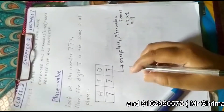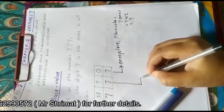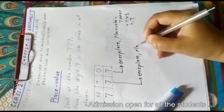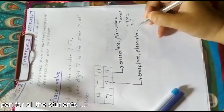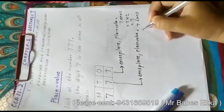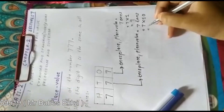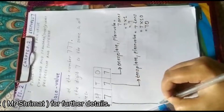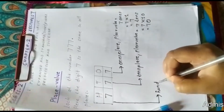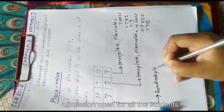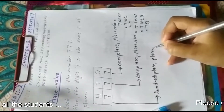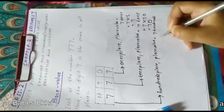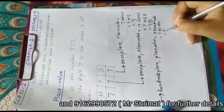In the same way, 7 is at the tens place, so its place value is 7 tens, which means 7 into 10 equals 70. In the same way, this 7 is at the hundreds place, so its place value is 700, which means 7 into 100 equals 700.